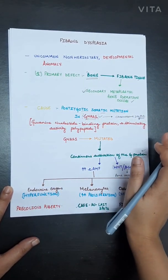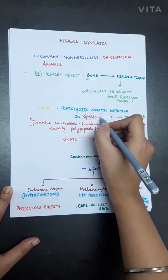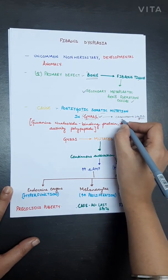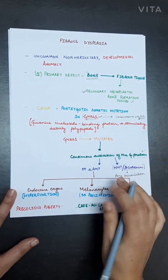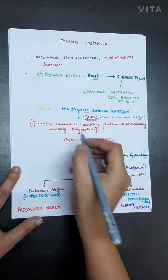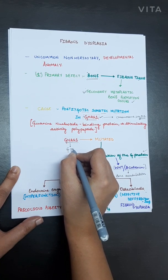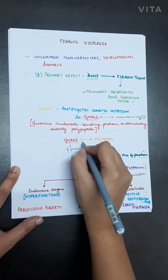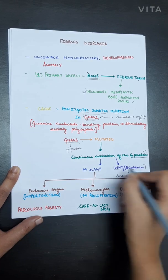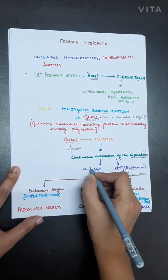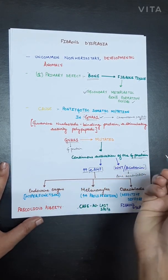The cause of this disease is basically unknown, but recent studies show that there is a post-zygotic somatic mutation in the gene GNAS1. This gene is present on chromosome 20q13.2. The gene GNAS1 encodes for G protein, and whenever this gene is mutated, there is continuous activation of G protein.